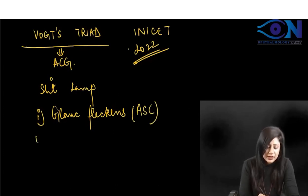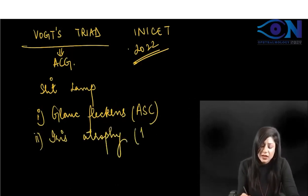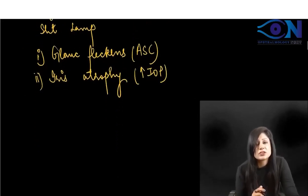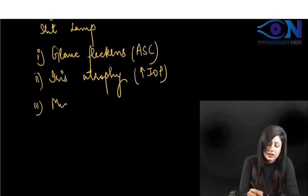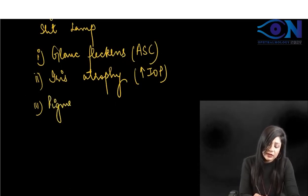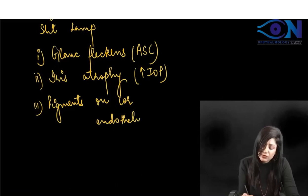The second component is patches of iris atrophy, because intraocular pressure is very high — with high stony hard pressure, we get patches of iris atrophy. The third component is pigments on the corneal endothelium. Note that mid-dilated pupil is not part of the triad. This is the Vox triad — very important.